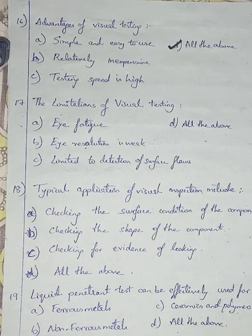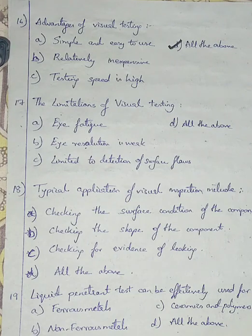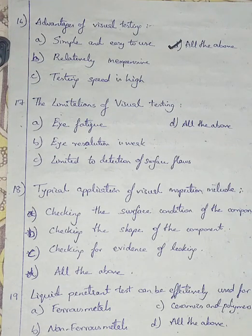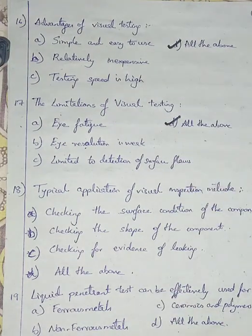Question number 17. What are the limitations of visual testing? Option A: eye fatigue. Option B: eye resolution is weak. Option C: limited to detection of surface flaws. Option D: all the above. When observing an object your eye gets strained — eye fatigue. Eye resolution is weak, so you cannot see micro-cracks. And you cannot see the internal parts of an object, so it is limited to surface flaw detection. So I am going with option number D, all the above.